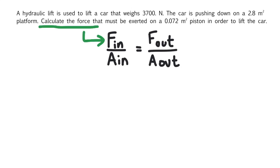So the input force is not known, and that's what we're going to solve for. So we need to look at the problem and find the area that matches that input force. That would be this, the piston, 0.072 meters squared. So that leaves 3,700 Newtons as the output force and 2.8 meters squared as the output area.